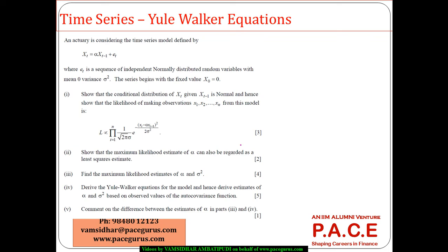Let's look at this example of a time series, considering a time series model defined as an AR(1) process. ET is a sequence of independent normally distributed random variables with mean zero and variance sigma squared.